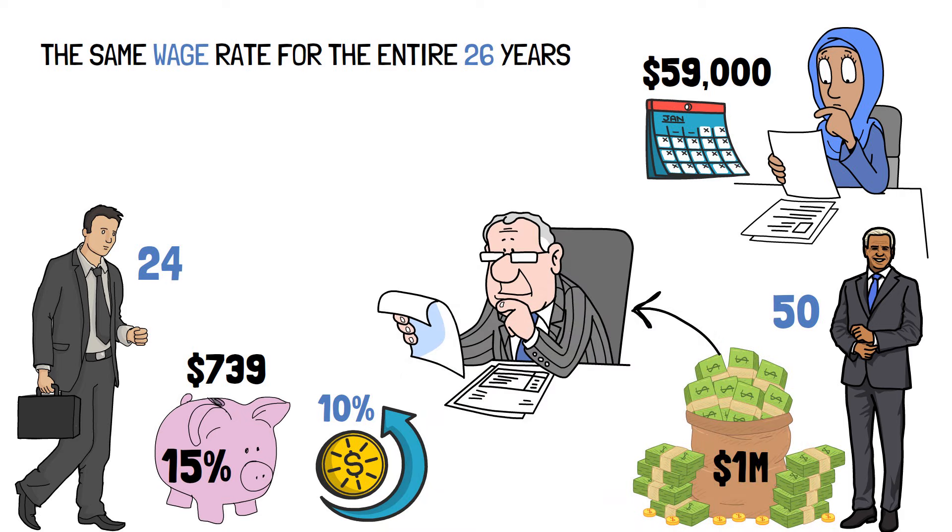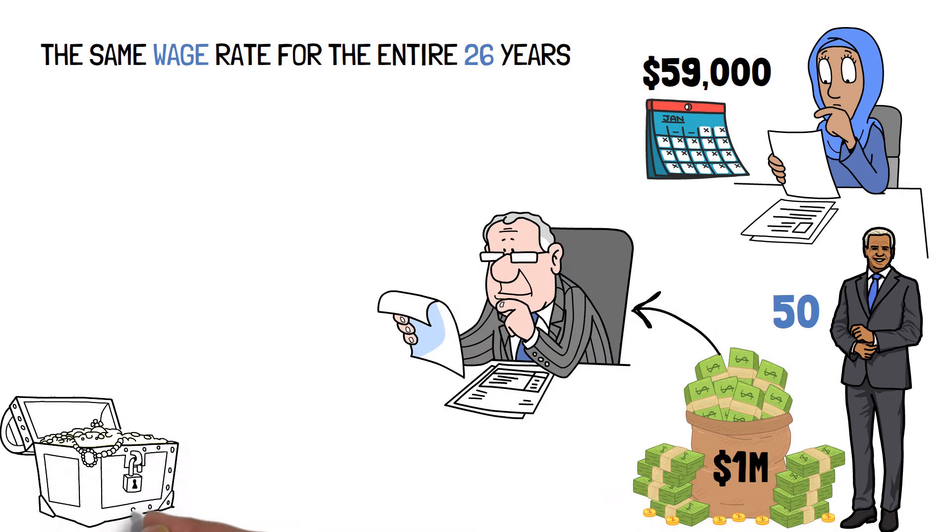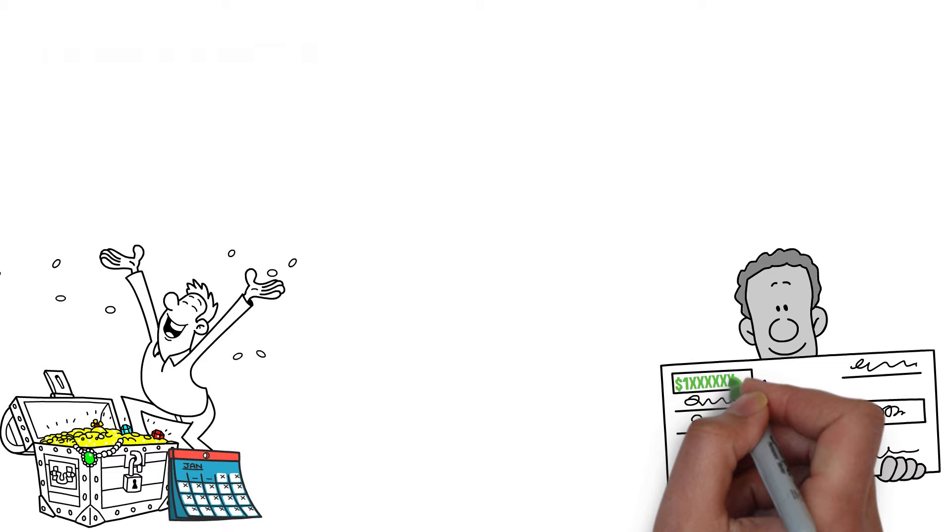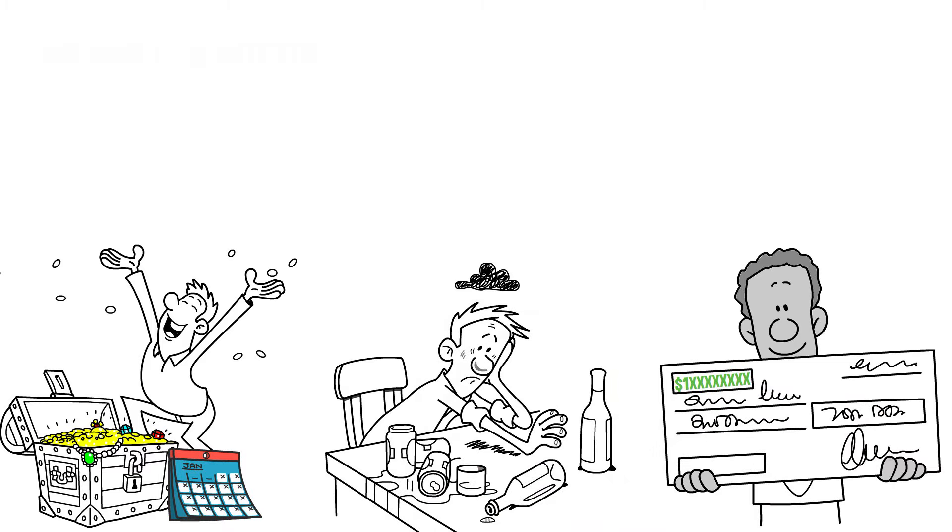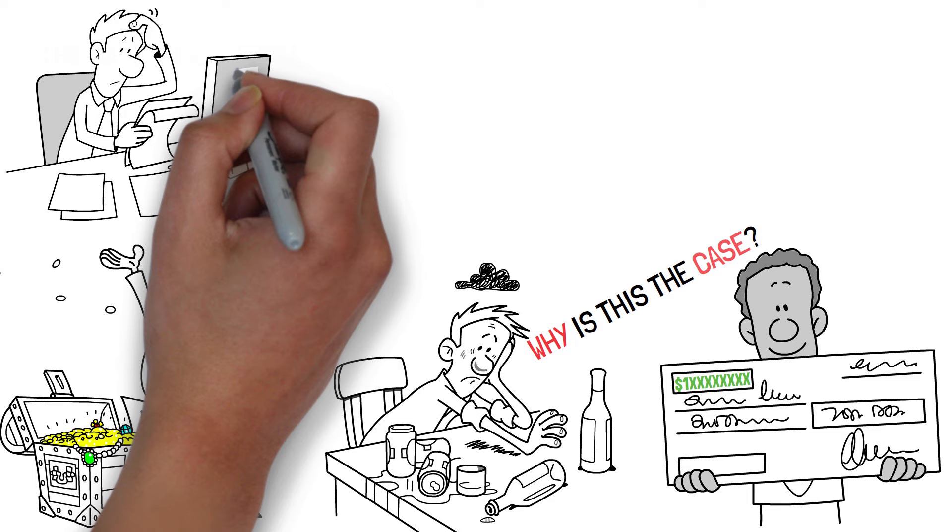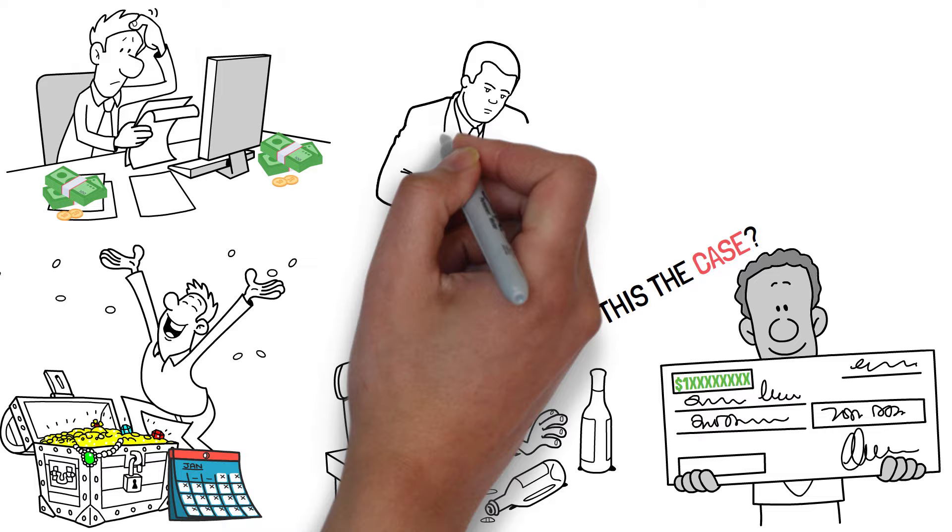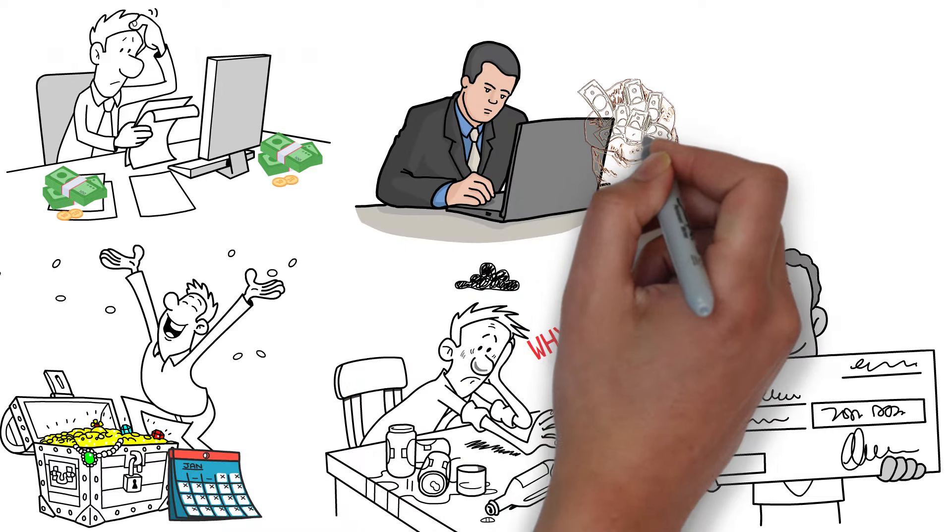When you accumulate wealth over time, you learn how to manage it wisely. We've all heard of the overnight millionaire who blew his fortune in a few months. Lottery winners have a 70% probability of losing their winnings in a matter of years. Why is this the case? Because they lack the wealth mentality and understanding required to allocate significant sums of money. The wealthy accumulate wealth patiently and deliberately over time.